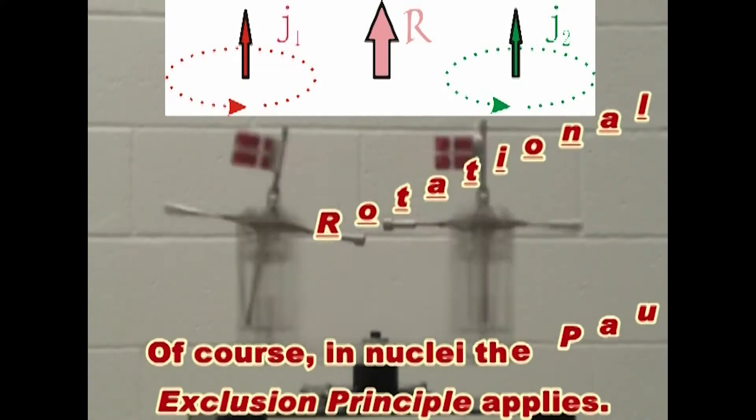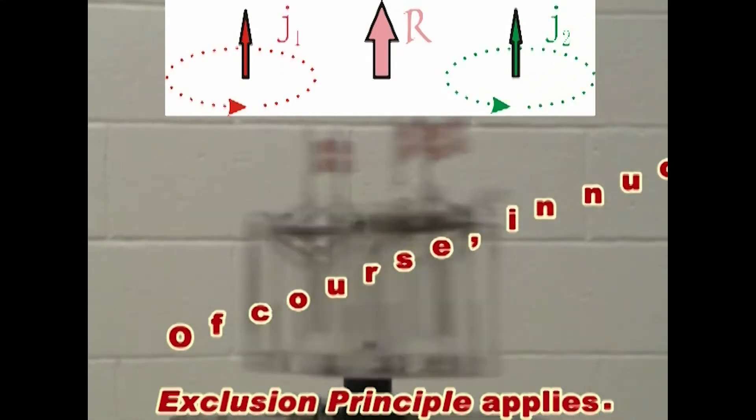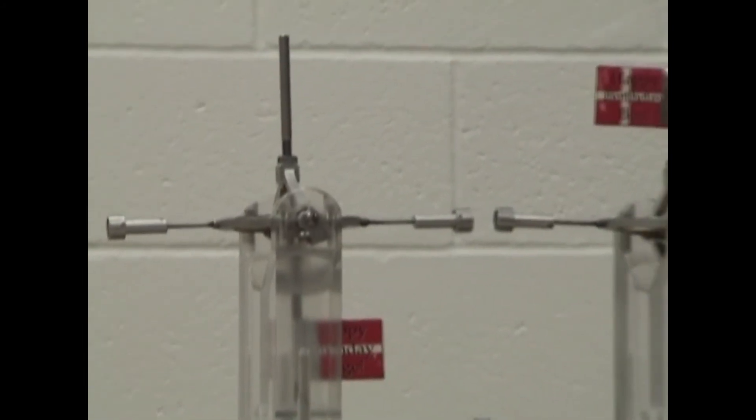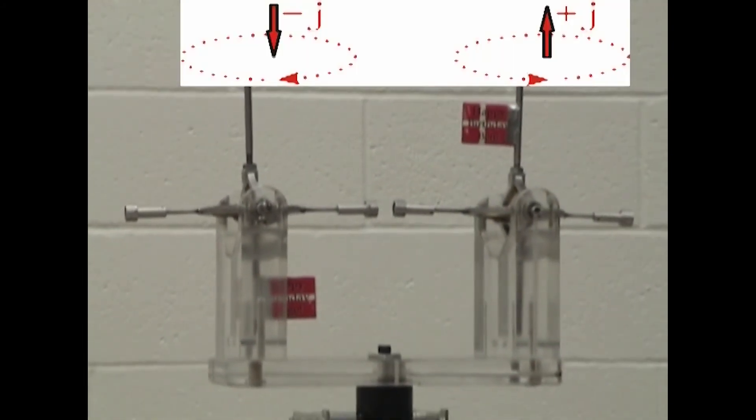Now we will slow the nucleus down. And you will see as it approaches its ground state in zero rotation, the particles pair up once again in the lowest energy state.